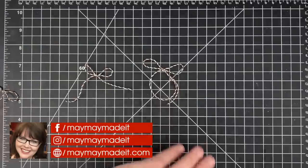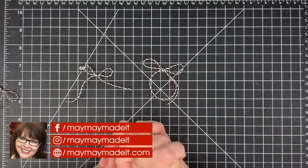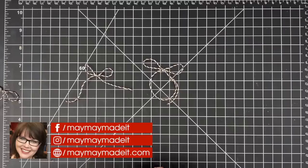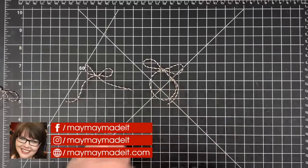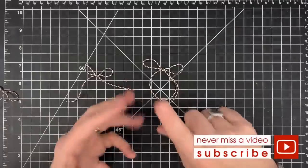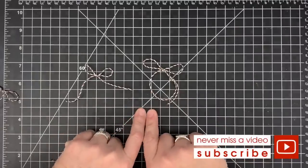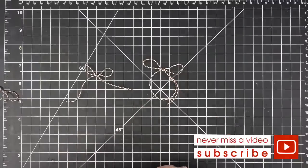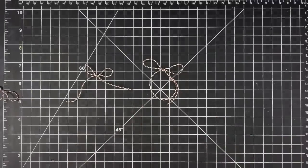All right guys, thanks so much for watching today's top tip. Don't forget to subscribe to this channel because when we reach 100,000 subscribers, we're having a giveaway. We're going to give one lucky winner their choice of electronic cutting machine: a Cricut, a Brother ScanNCut, or a Silhouette. All you need to do is get us to 100,000 by subscribing and then we'll have our giveaway. Thanks so much for watching. Come back every Monday and Friday for more top tips. Talk to you again real soon. Bye-bye.